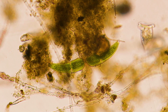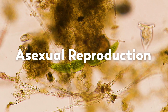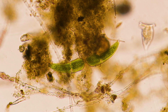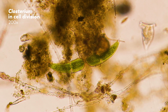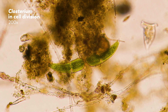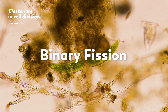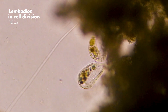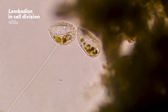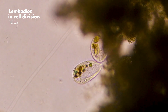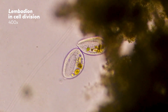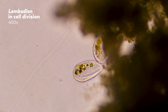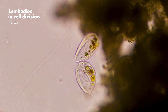Most unicellular reproduction is asexual, meaning one organism on its own can reproduce itself. The most common form of asexual reproduction in the microcosmos is binary fission — one organism simply divides into two. Unicellular organisms do not have genders, but by custom, the dividing cell is called the mother, while the cells formed after division are called daughters.